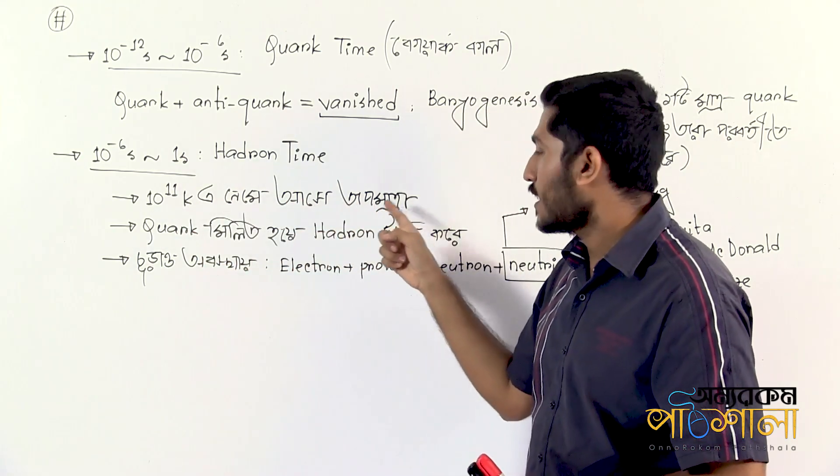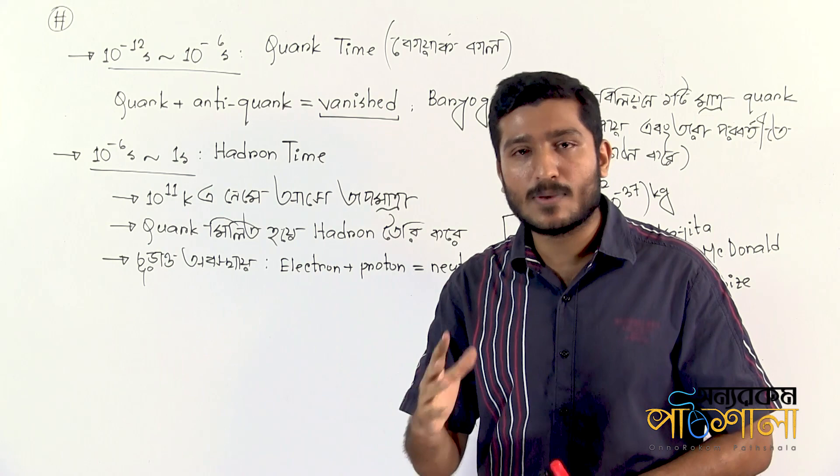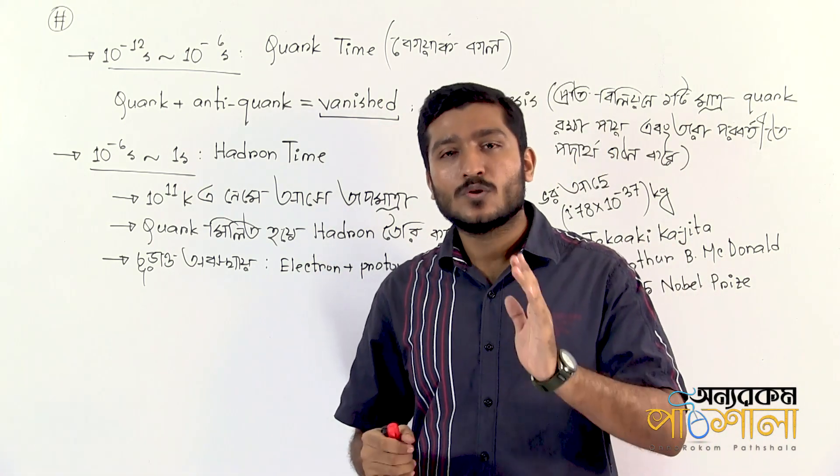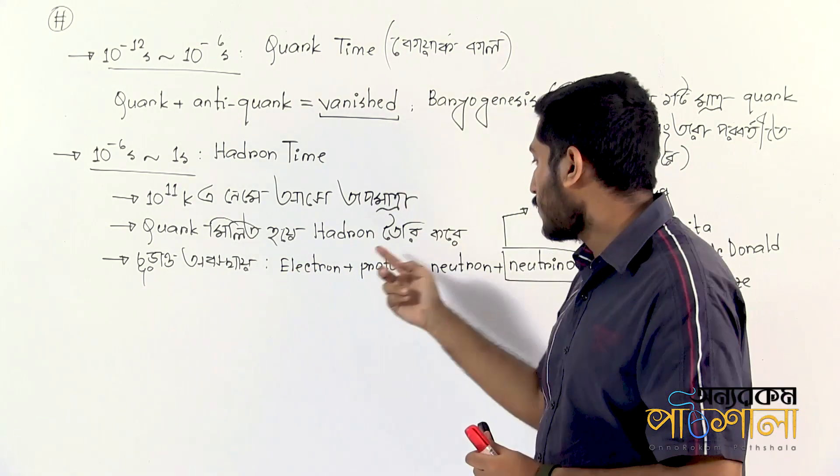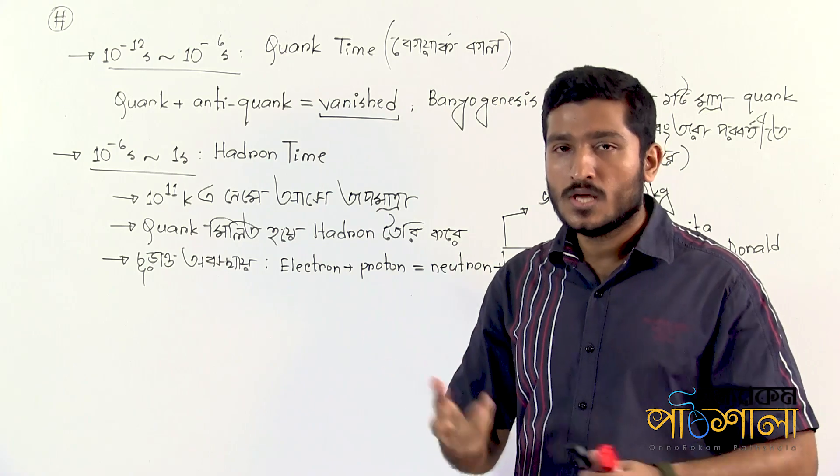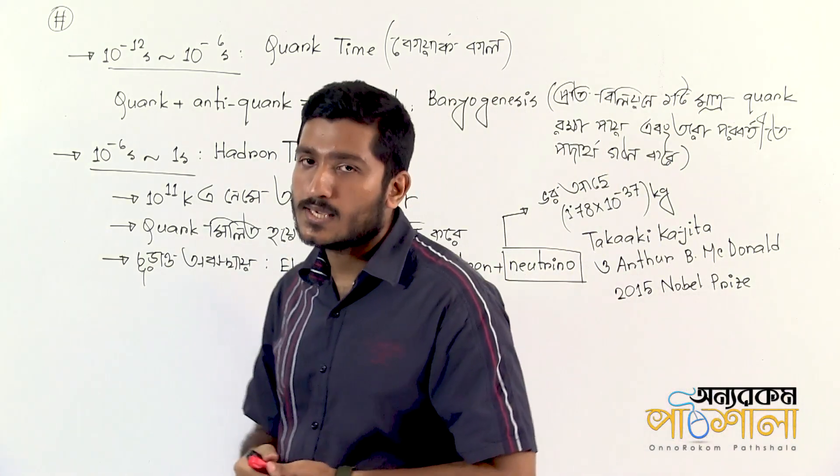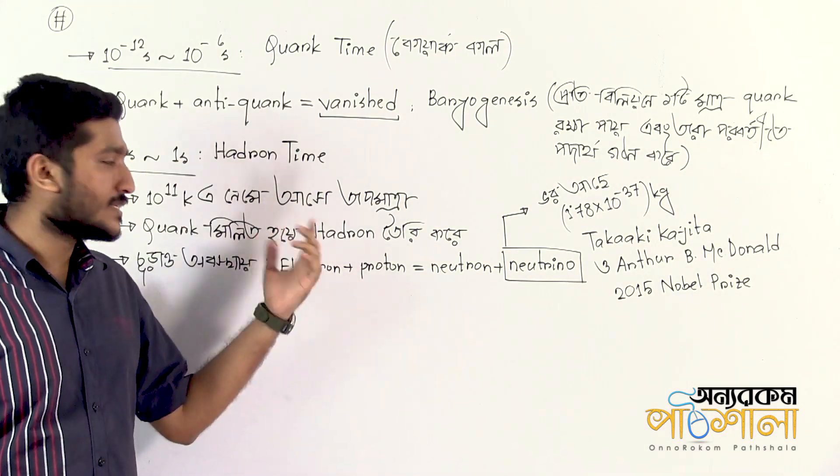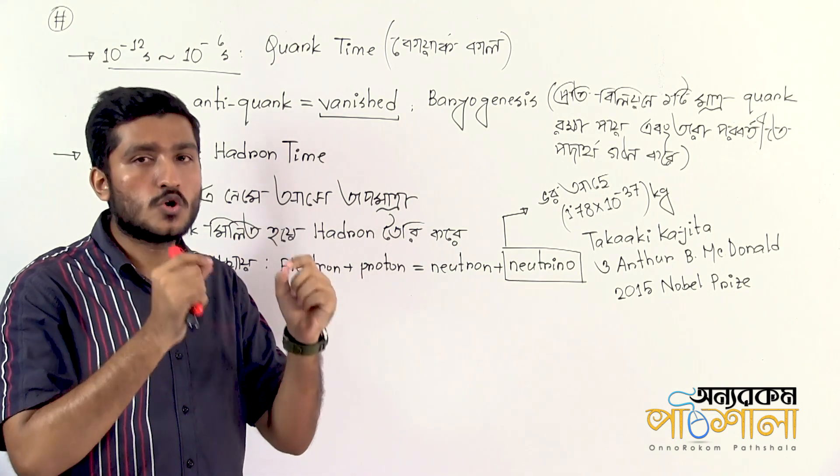The quark-gluon plasma that existed earlier now cools enough for quarks to combine into hadrons. Protons and neutrons are both hadrons formed during this collision and combination process. The quarks bind together through the strong force to create these composite particles.